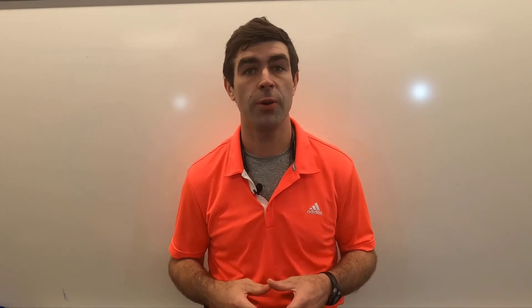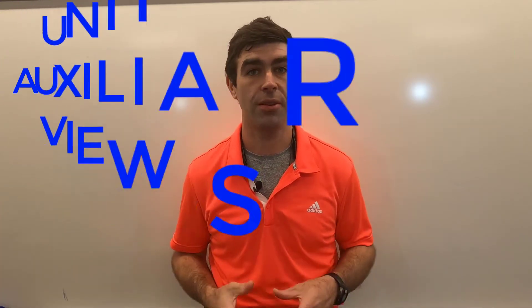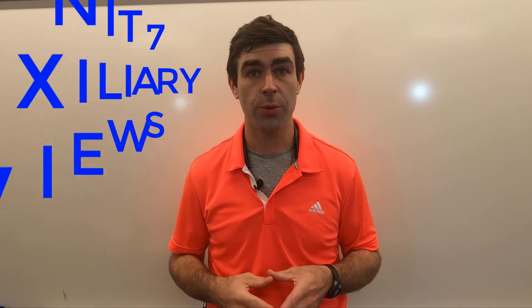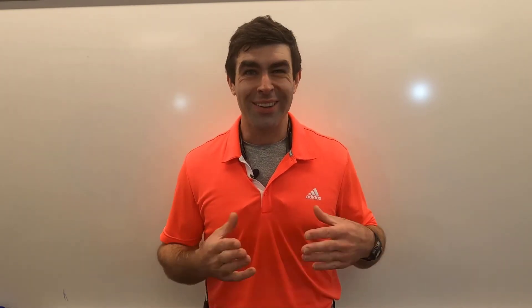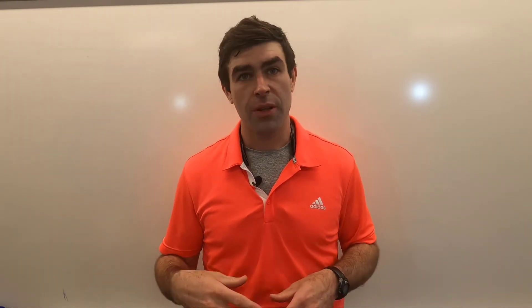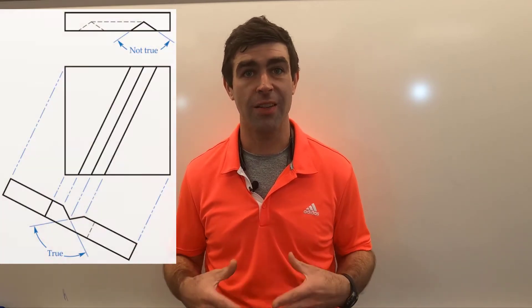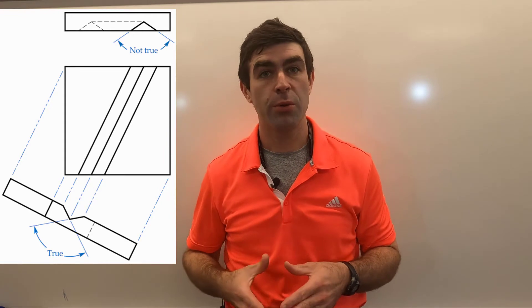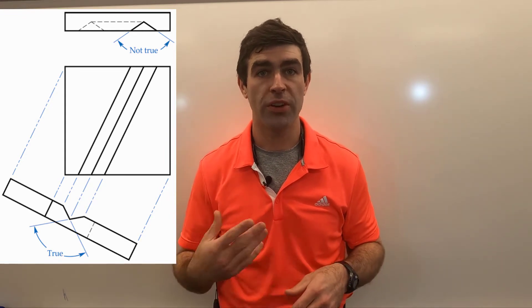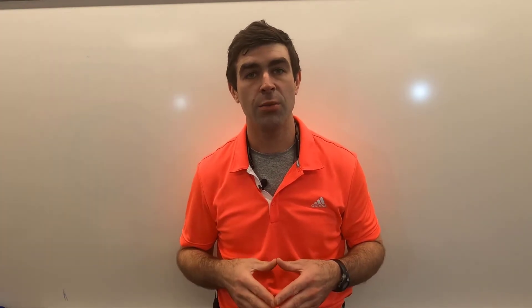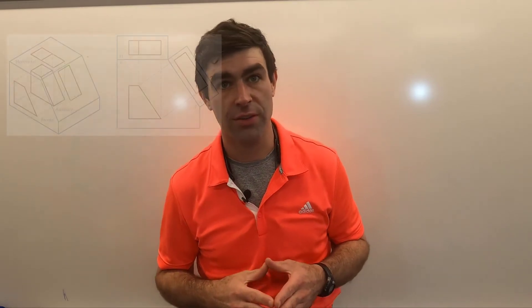Let's talk about Unit 7, Auxiliary Views. Auxiliary views are not used as much as something like section views, but it's important to understand what they do. Auxiliary views can be used to show the true size and shape of an inclined surface. They are created with a projection plane that is not in one of the principal directions.